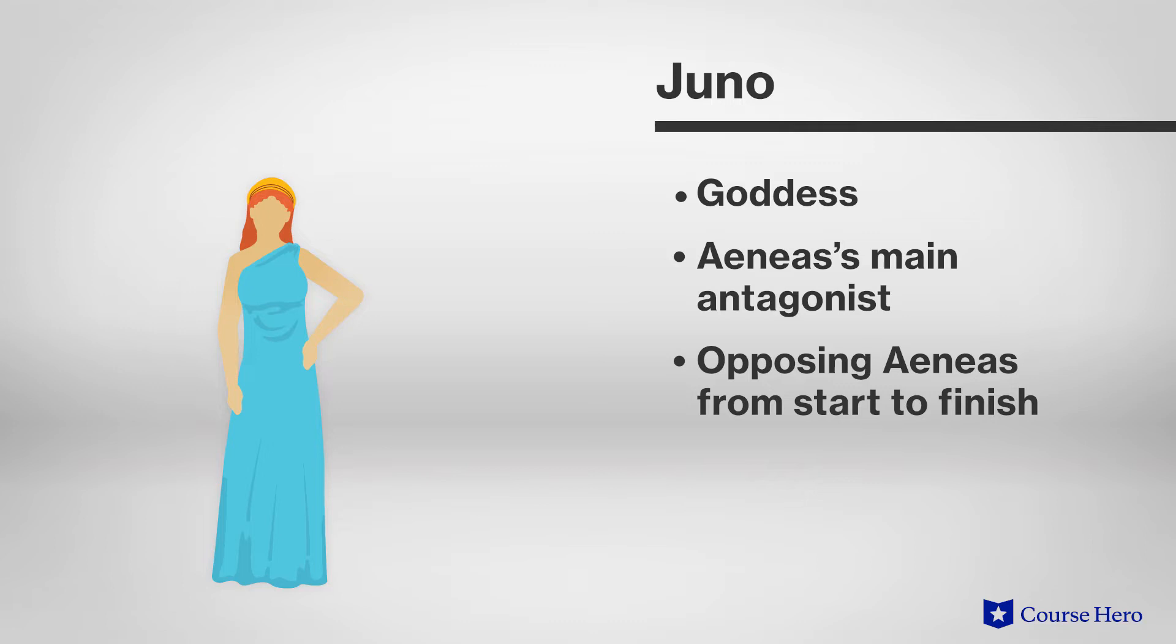Her enmity for the Trojans springs from losing a contest between goddesses to choose who was most beautiful. Frustrated in her marriage to Jupiter, she is jealous, vengeful, and holds a grudge.